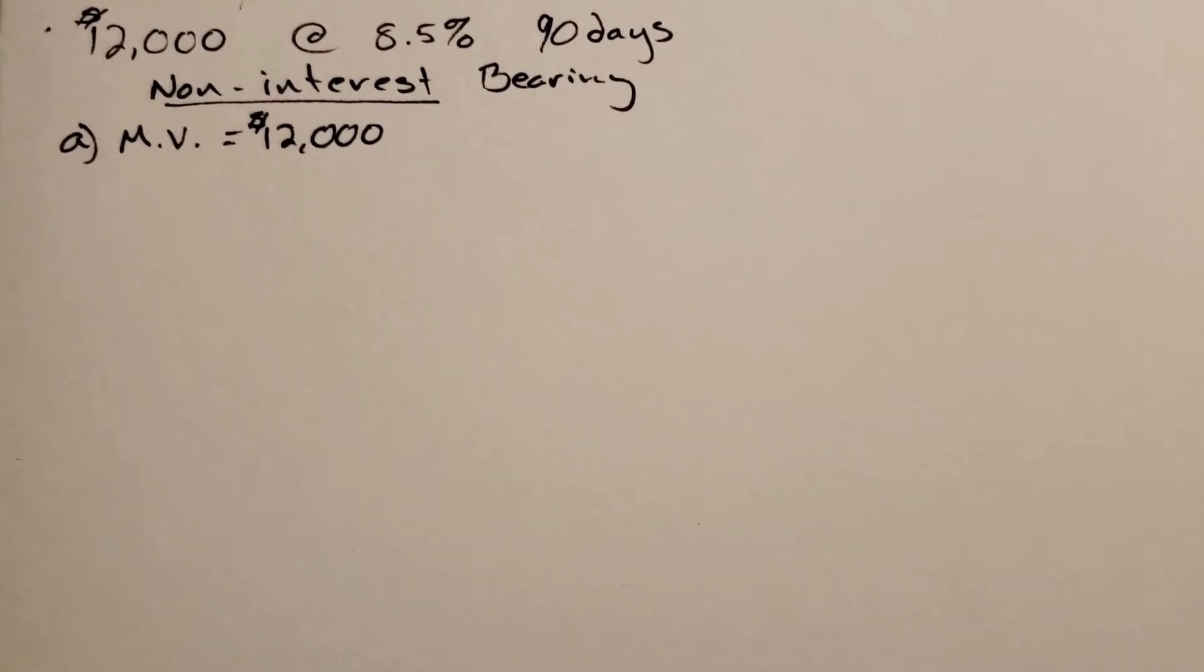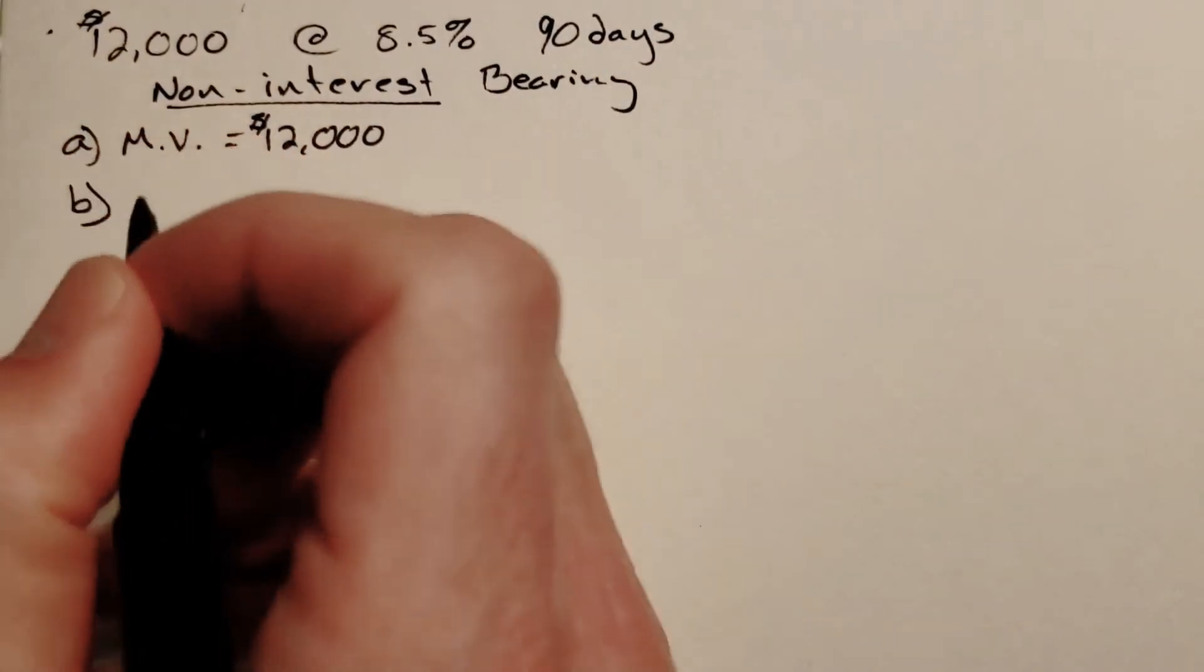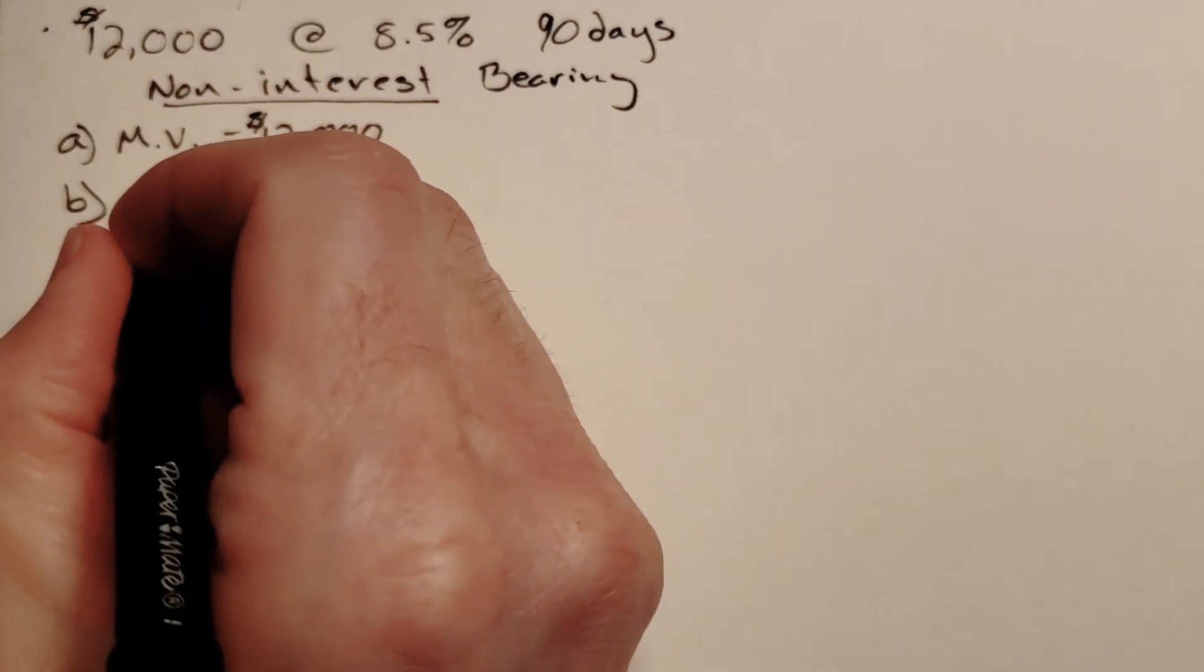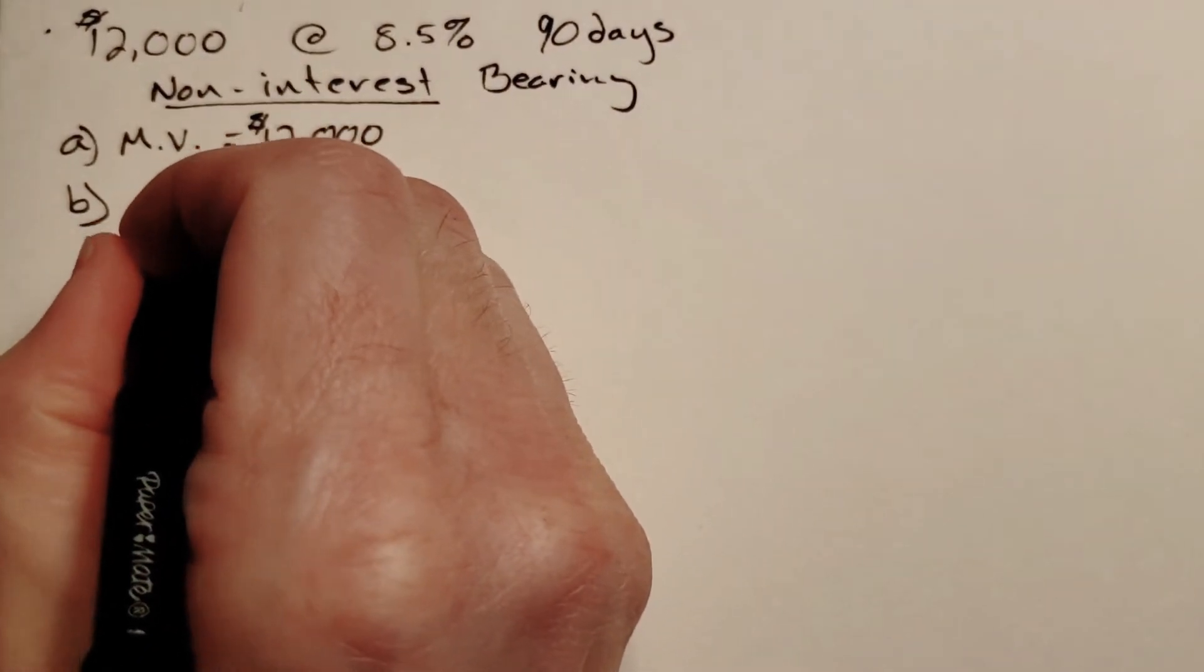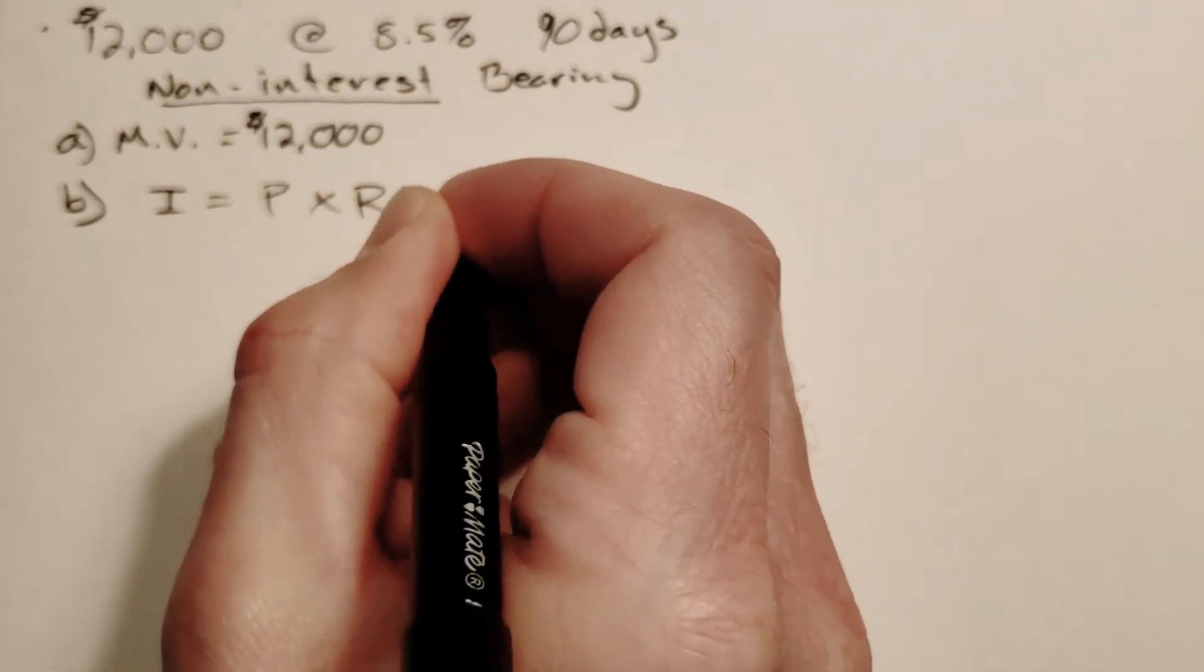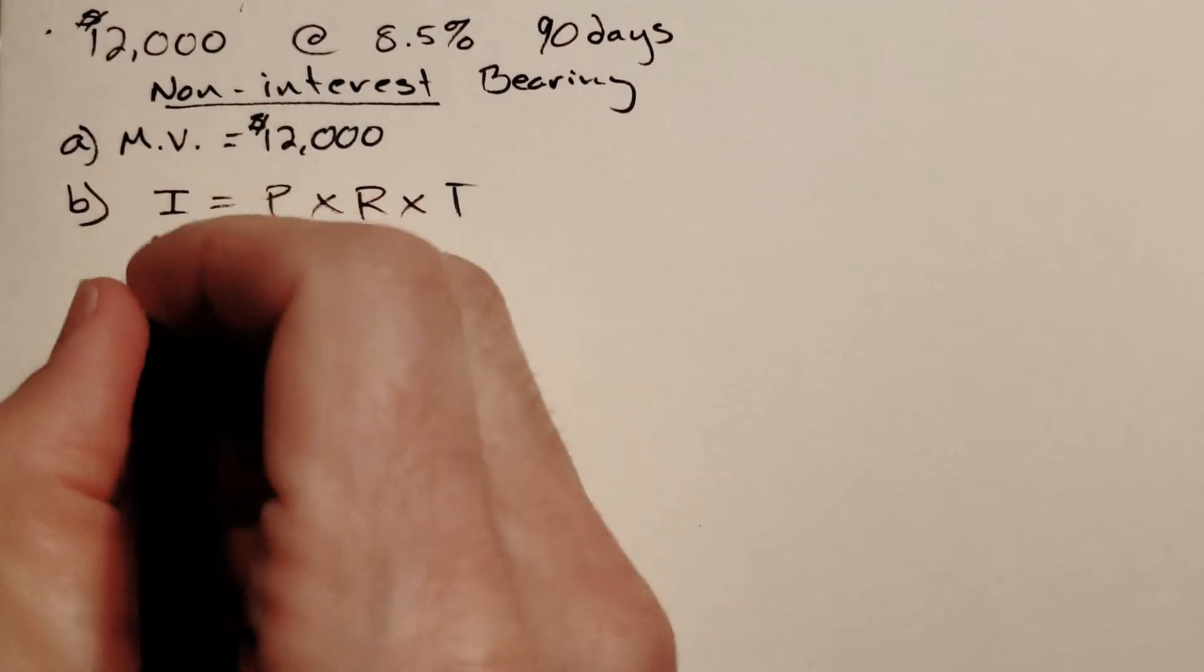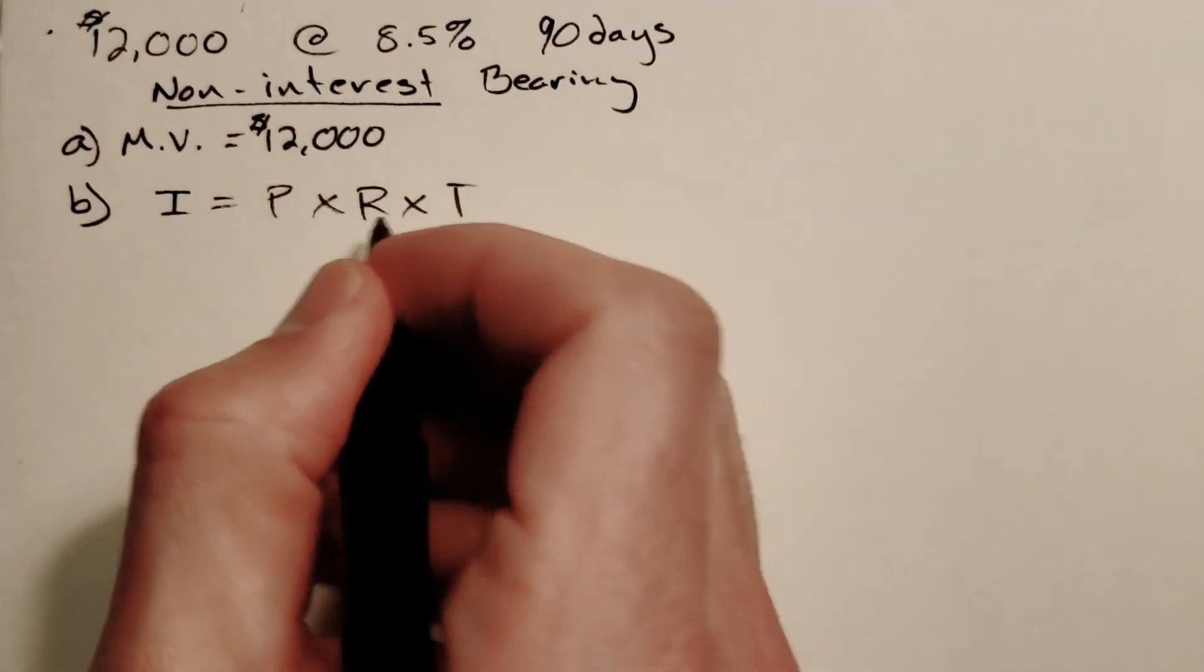Part B says what is your bank discount. This is where it gets a little complicated because it seems different but it's actually not. In the previous chapter we had interest equals principal times rate times time.